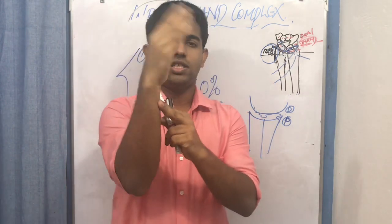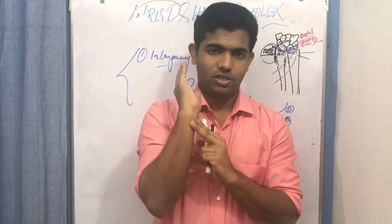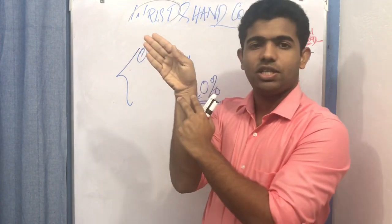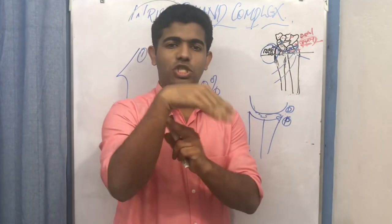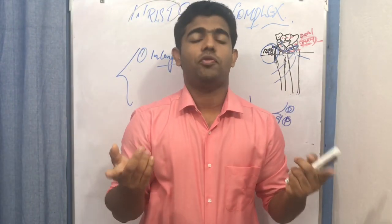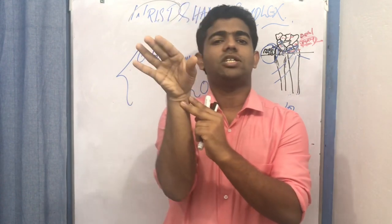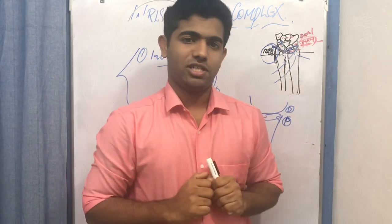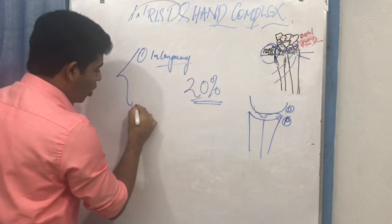The greater range of motion includes flexion, extension, ulnar deviation, and radial deviation. Normally, flexion and extension are greater than radial and ulnar deviation, whereas ulnar deviation is greater than radial deviation when comparing the two deviations in the radiocarpal joint.